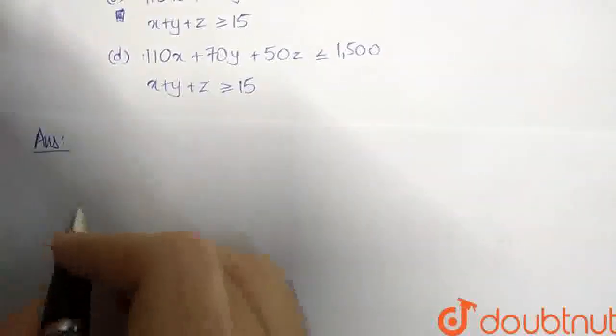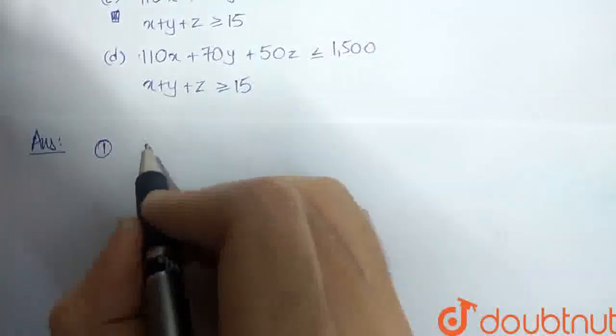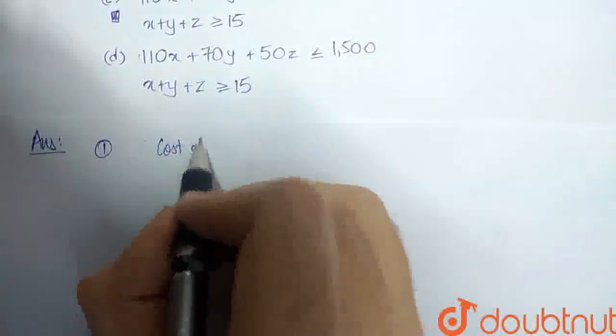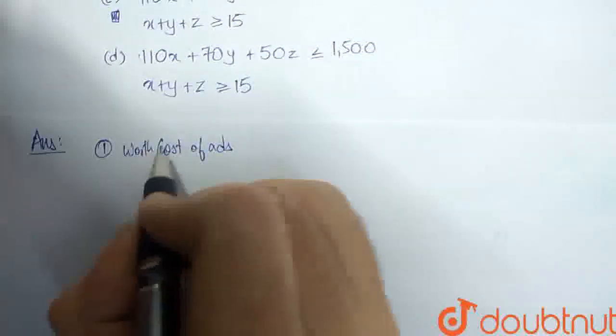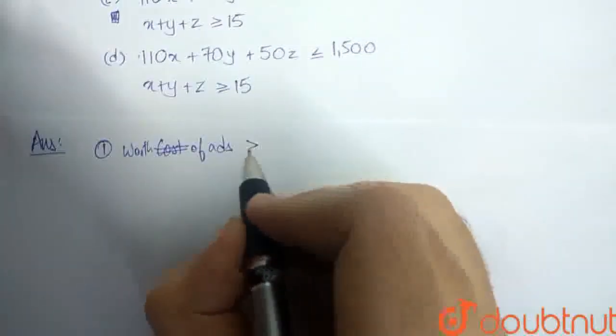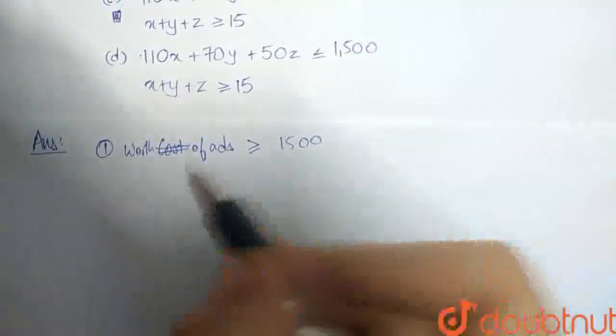So, for the first inequality, it says that cost of ads or rather worth of ads must be at least $1,500. So, worth of ads is the total cost of all ads.